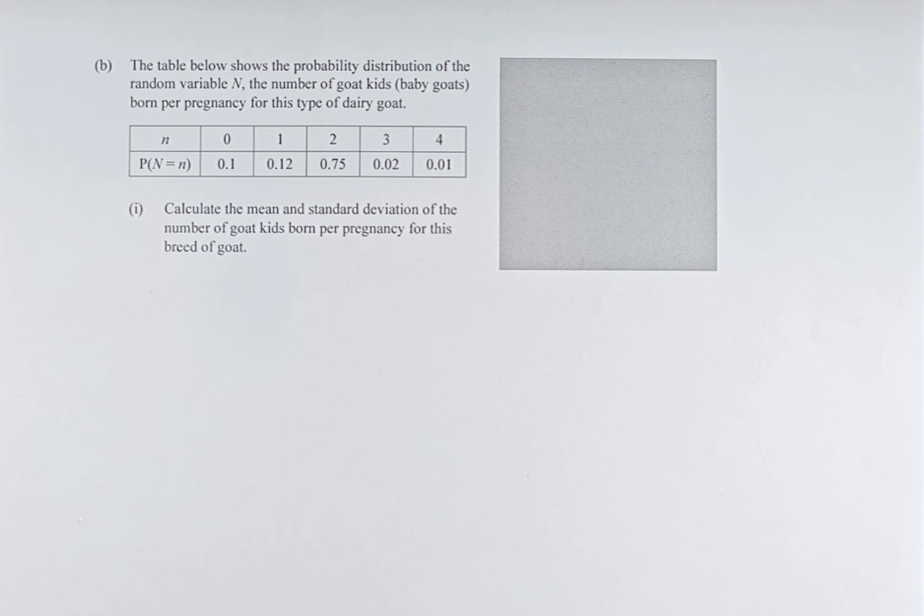The table below shows the probability distribution of the random variable n of the number of goat kids or baby goats born per pregnancy for this type of dairy goat. So you have n and the probability at the bottom.